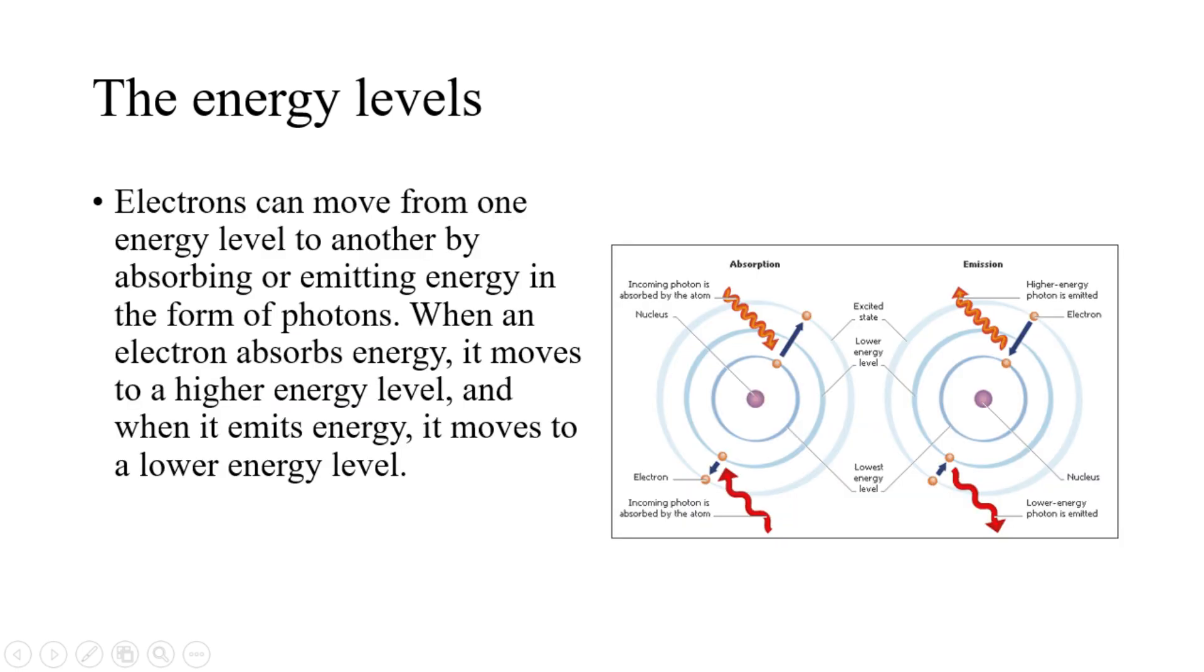Electrons can move from one energy level to another by absorbing or emitting energy in the form of photons. When an electron absorbs energy, it moves to a higher energy level, and when it emits energy, it moves to a lower energy level.